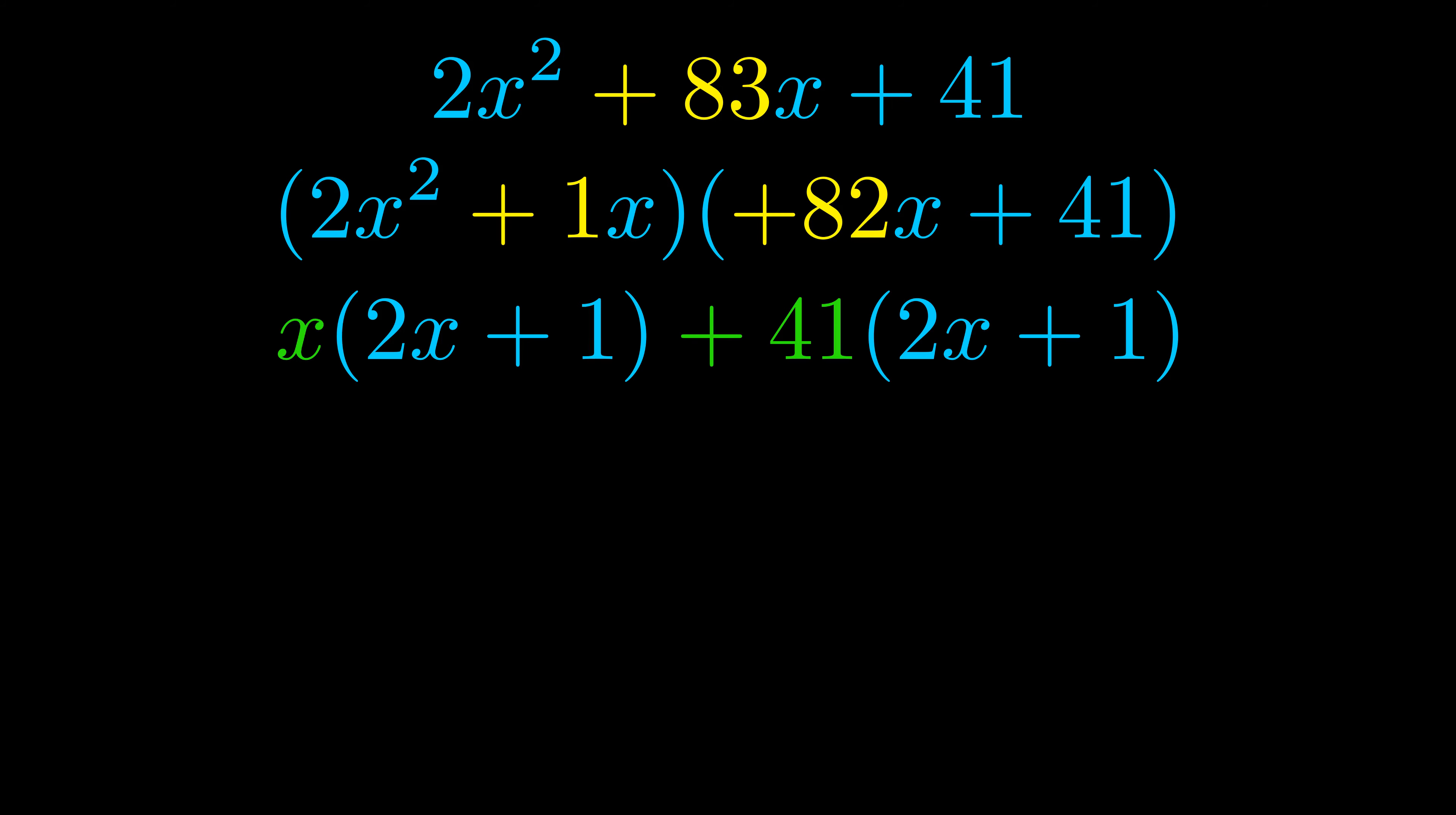Notice also how what remains inside of the parentheses is the same in both cases. The blue values are the same. Those blue values will become one of our factors and we will combine the two green values, the GCFs that we pulled out, to get the other one. And that is our fully factored equation.